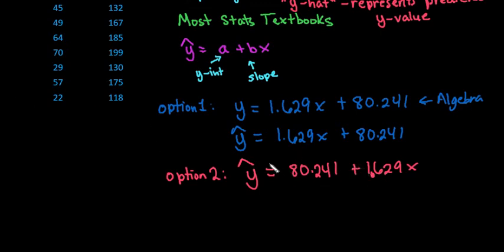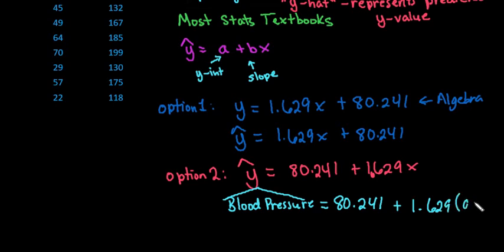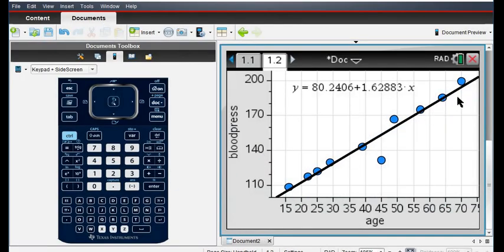And a lot of stats textbooks will actually even take it a step further from this and they'll actually name the response variable and the explanatory variable. So they may say that this is the blood pressure and then put a hat over that to say that it's the predicted value, 80.241 plus 1.629 times the age. So now with this, if you wanted to make predictions, this screen is not very helpful for predictions because all it does is it gives you the equation of the line.